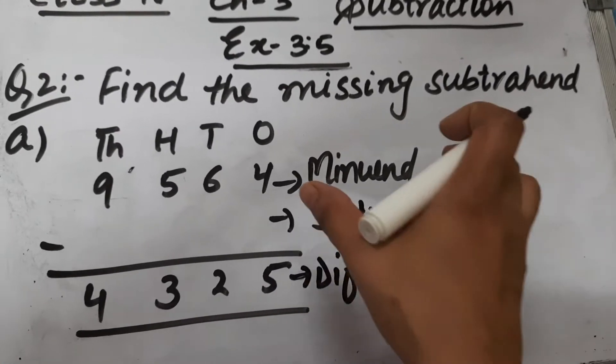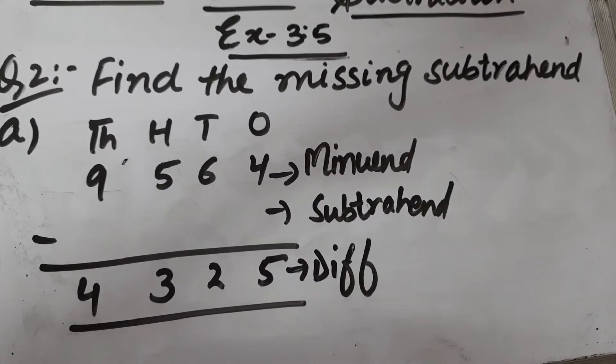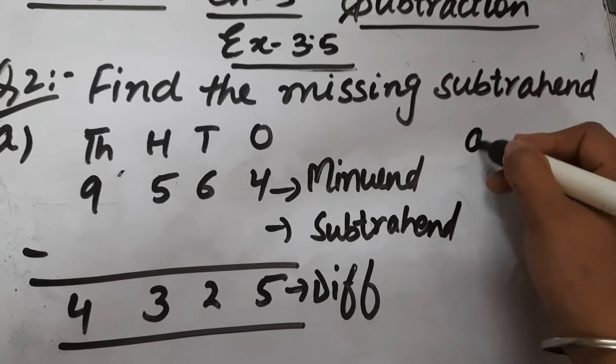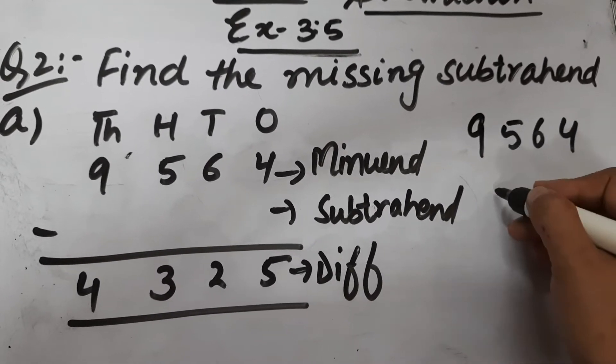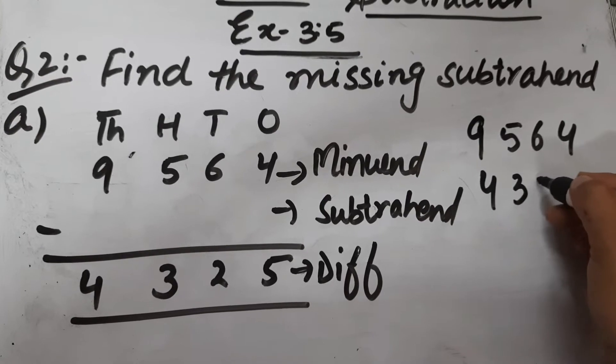We have to subtract the difference from the minuend. So let's start with part a: 9,564 and 4,325.